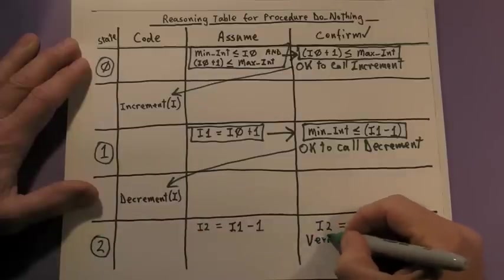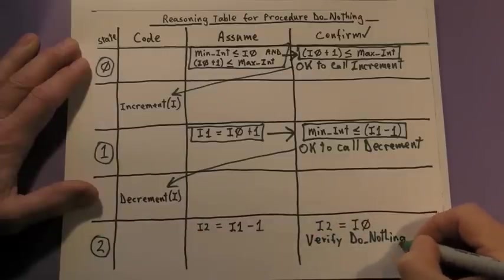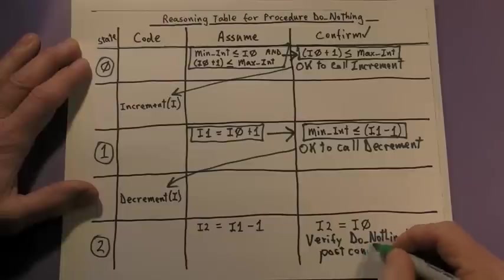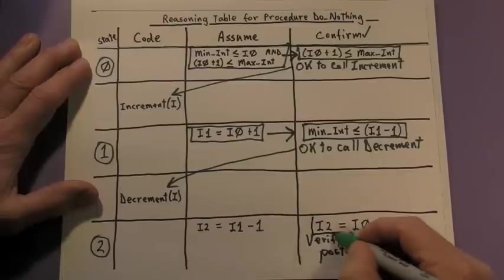Finally, in state 2, we have to verify that do nothing's post condition, which is I2 equals I0, can be proved by making use of all the premises.